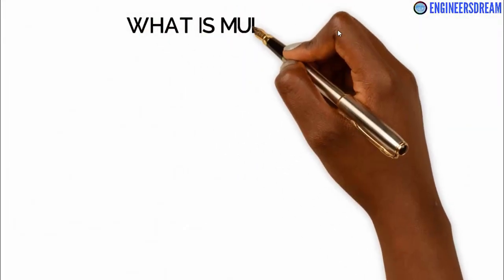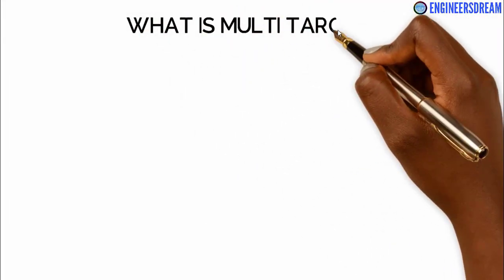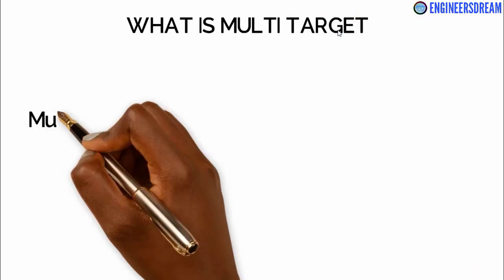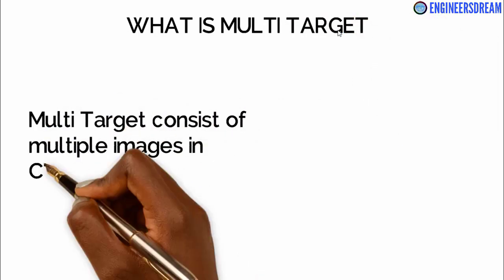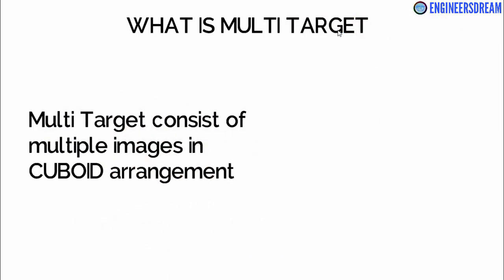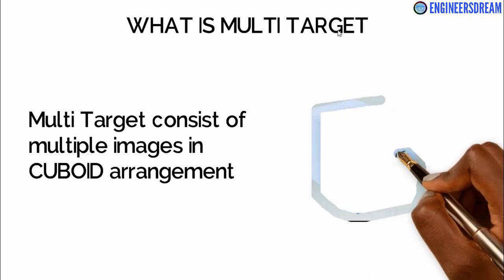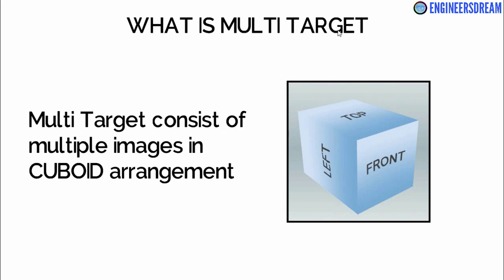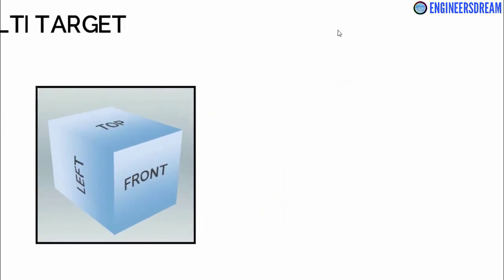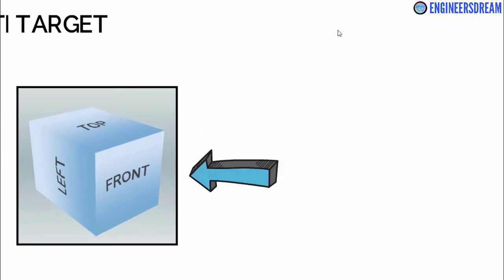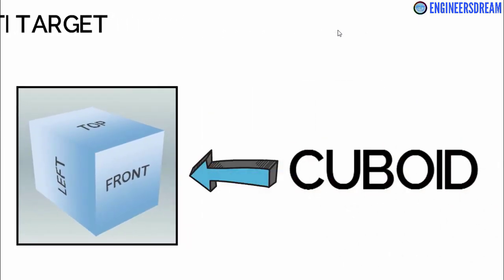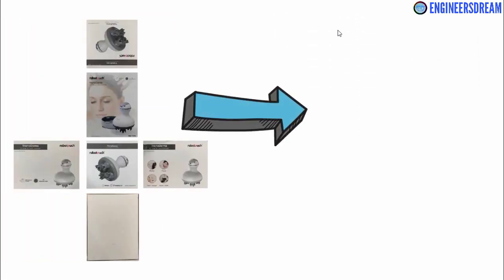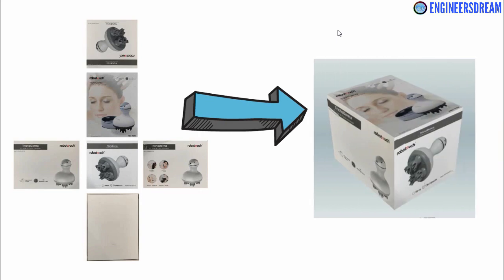In this video we will understand Vuforia's multi-target feature and then we will capture images for a multi-target. Multi-target, as the name suggests, consists of multiple image targets that are in cuboid arrangements. The multi-target feature of Vuforia is generally used to recognize cuboid objects. That's why in multi-target we need 6 images, each representing one side of a box.